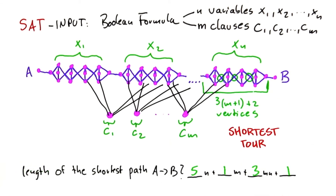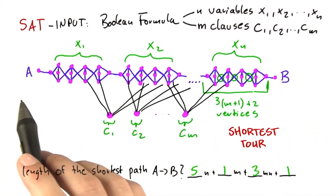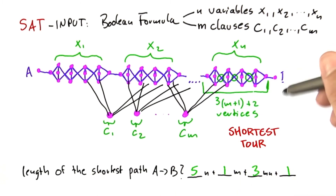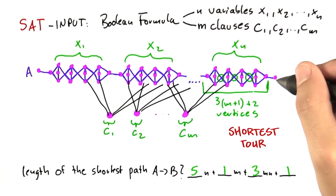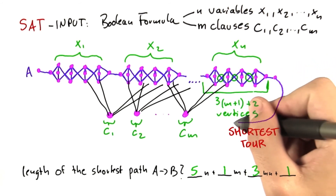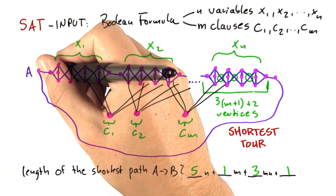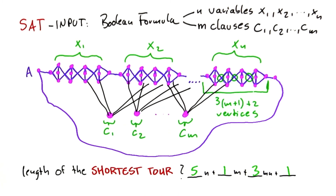We are almost done showing that shortest tour is NP-complete. There's one small detail missing: right now we are only going from A to B and asking for a shortest path, not a shortest tour. But that is easy to fix. We'll just remove vertex B and make this one edge very, very long. Then it's no longer the shortest path from A to B, but the length of the shortest tour.